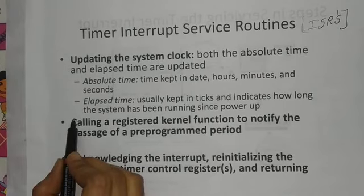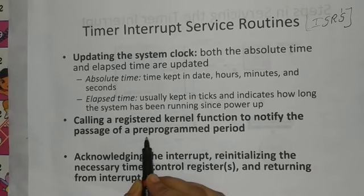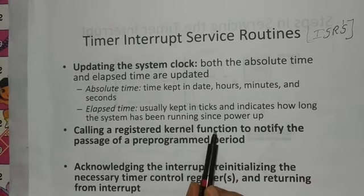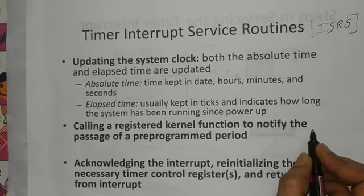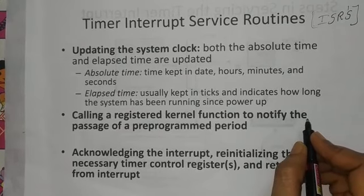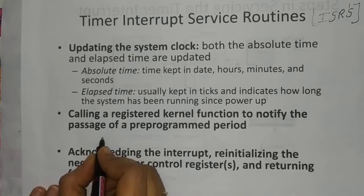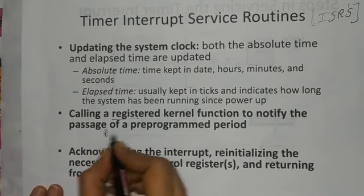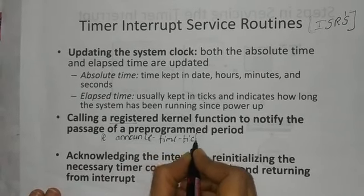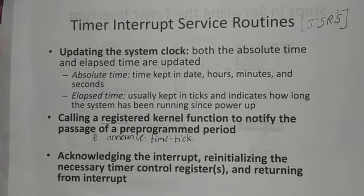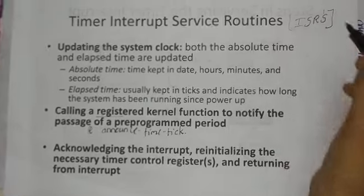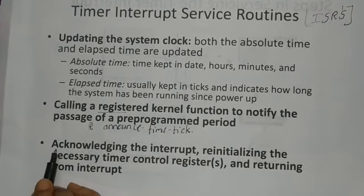The next and main step in the ISR is calling a registered kernel function to notify the passage of a pre-programmed period. Whenever the interrupt service starts and whenever any device is interrupting the system or processor, the system stops the already running process and continues with the interrupted process. In this interrupt service routine, the registered kernel function — most importantly the announce time tick function — is called by this registered kernel function, performing all the operations that the ISR needs to carry out.